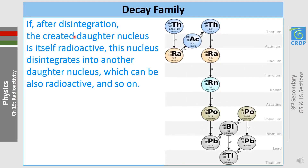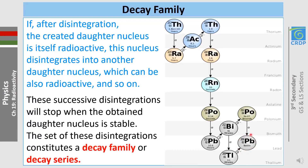Proceeding to the decay family: if after disintegration the daughter nucleus is itself radioactive, it disintegrates into another daughter nucleus, which can also be radioactive, and so on. For example, thorium decays into radium emitting alpha; radium into actinium emitting beta minus; actinium into thorium emitting beta minus; thorium into radium; radium into polonium; polonium into lead — continuing until a stable daughter nucleus is reached, which in this scenario is lead. These successive disintegrations form what we call a decay family or decay series.